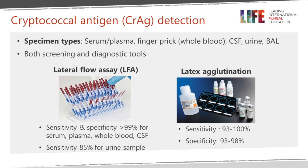The antigen test depends upon the release of carbohydrate from the cell surface in the cell capsule, and it can be done on multiple specimens: serum or plasma, finger prick whole blood, spinal fluid, urine — though it's less sensitive in urine — and BAL or bronchoscopy fluid. It can be used as both a screening test and as a diagnostic tool.